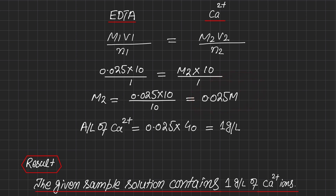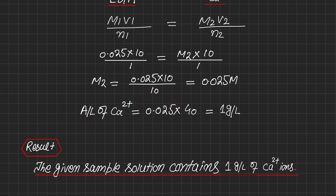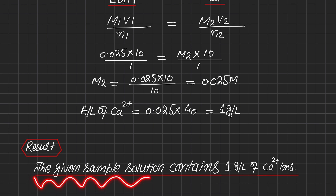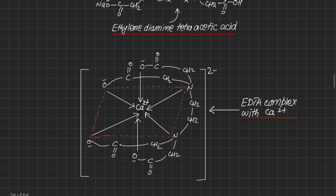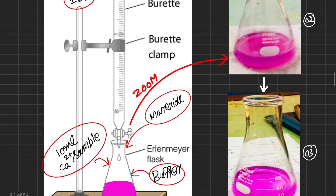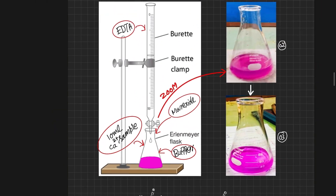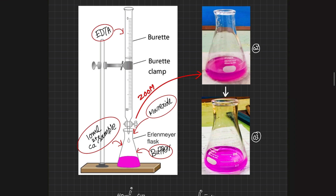We want to find M₂, the molarity of calcium. By rearranging and solving the equation, we get M₂ = 0.025 molar. To find the amount of calcium per liter, we multiply this molarity by the atomic mass of calcium, which is 40 g/mol. The answer is 1 gram per liter. The final result is that the given sample solution contains 1 gram per liter of calcium ions.